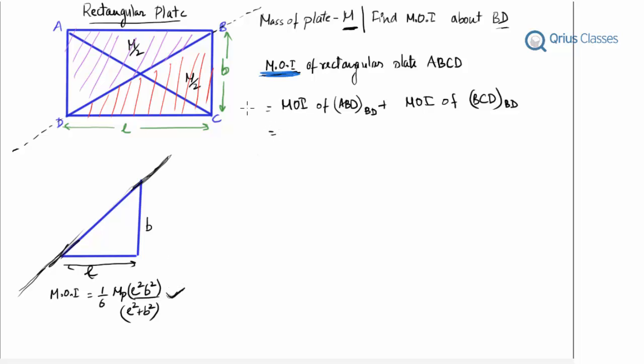We can say that since these two plates ABD and BCD are formed by symmetry, the mass of each plate will be half of that of the rectangular plate. One argument is symmetry, and another can be formulated in terms of area—both triangles have equal areas, and the mass is spread over the complete area. So mass is directly proportional to area. If the area is half, the mass would be half.